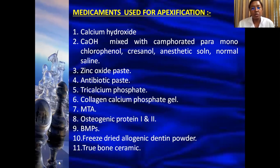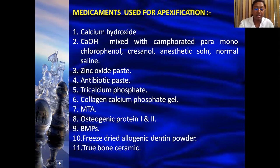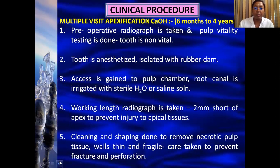Medicaments used for apexification include: calcium hydroxide mixed with camphorated paramonochlorophenol, cresanol, anesthetic solution, or normal saline; zinc oxide paste or antibiotic paste; tricalcium phosphate, collagen-calcium phosphate gel, MTA, osteogenic protein, bone morphogenic protein, freeze-dried allogenic dentin powder, or true bone ceramic.